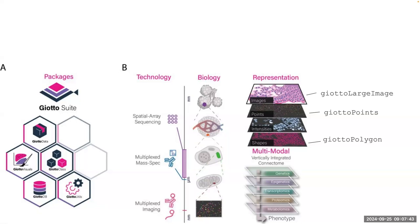They emphasize that different types of data can be represented. Of course, image data is involved in spatial, so they have a class called GiottoLargeImage which handles most types of image data. In terms of points, a transcript — measuring the expression of a gene — would be considered a point. They have a class for that, and you can measure intensity data as well. From the spatial end, you can measure different shapes or segmentations of cells, nuclei, or other things, and they have a really generic polygon class representing all sorts of types of shapes.